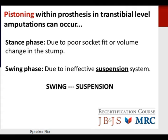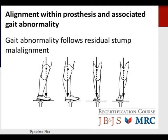Pistoning within the prosthesis in a trans-tibial amputation can occur. If pistoning occurs in the stance phase, it is often due to poor socket fit or volume change in the stump. If it occurs during swing phase, it is often a suspension system issue — a suspension abnormality results in a swing phase gait abnormality. Alignment within the prosthesis associated with gait abnormality is often tested and follows residual stump malalignment. Understanding whether alignment is inset or outset, or more anterior or posterior, is important.